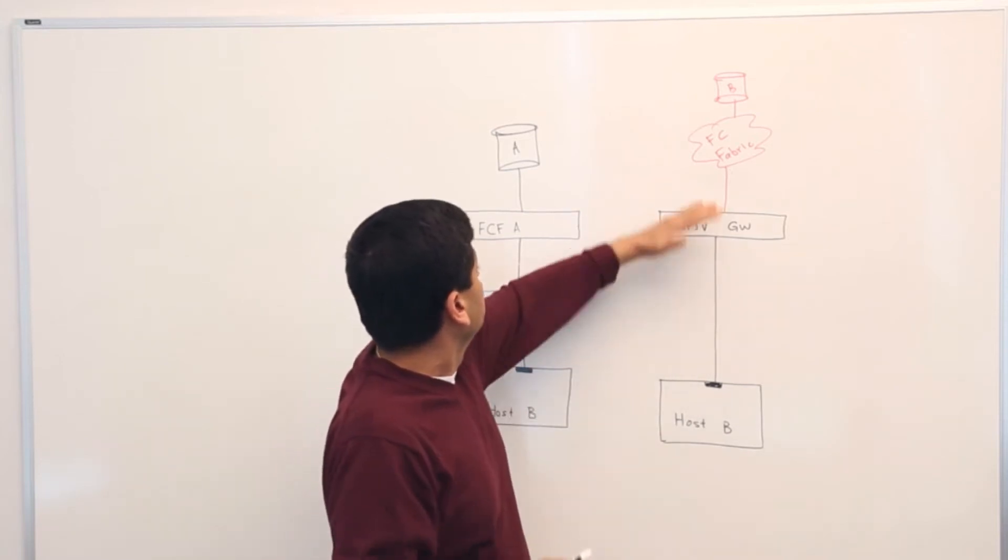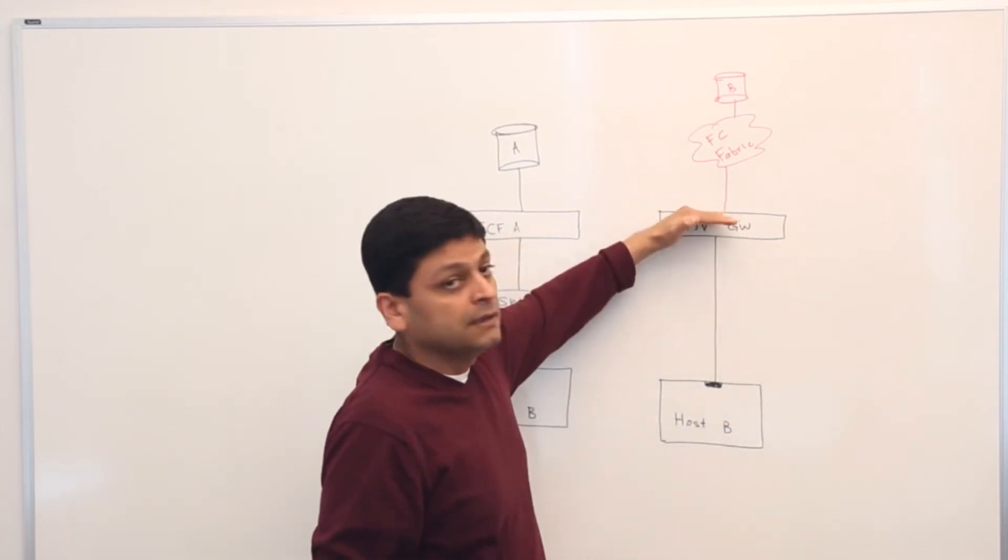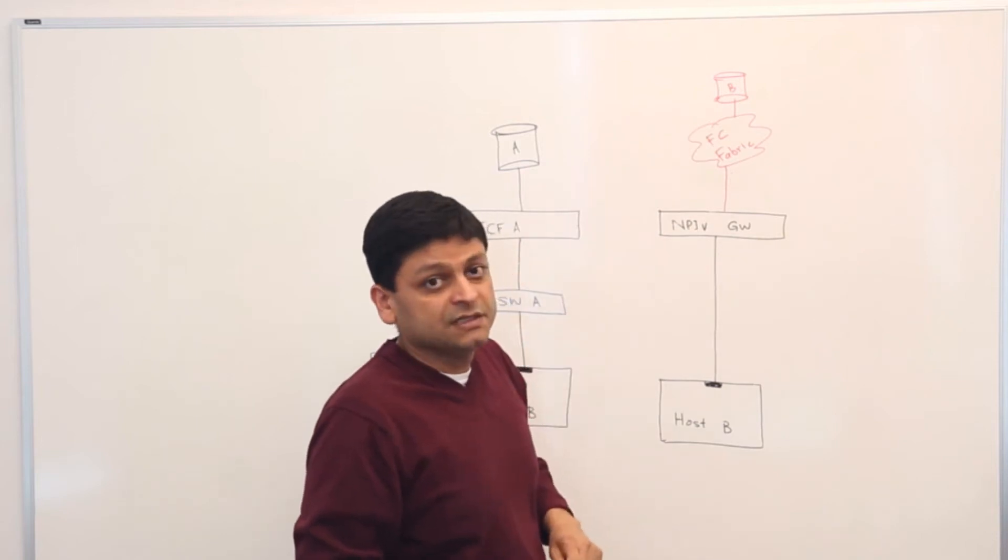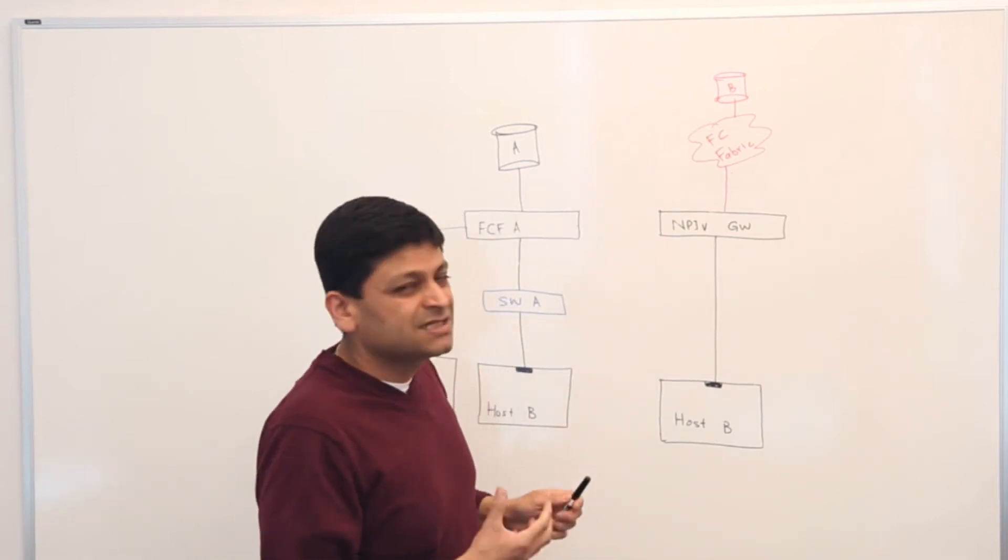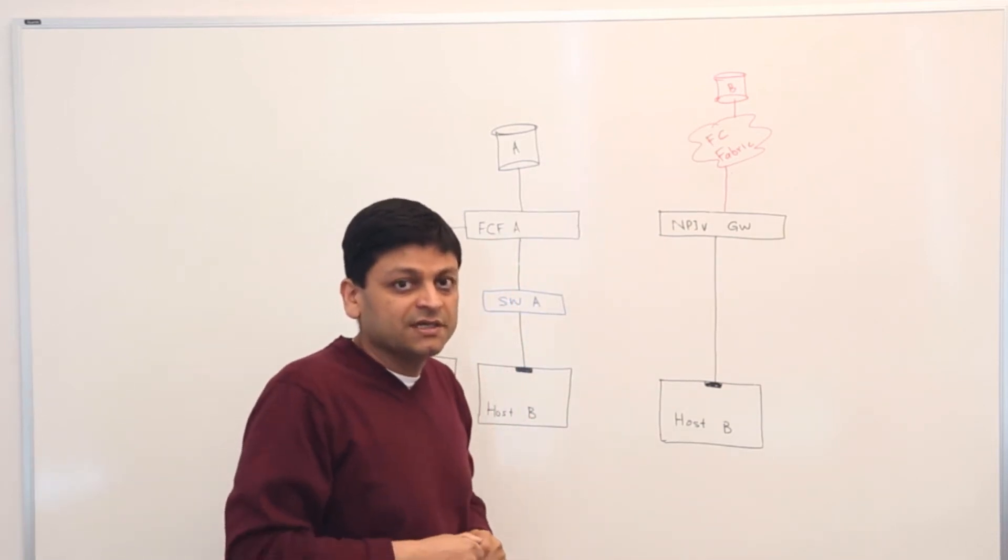And as you can see, below everything is Ethernet. On the top, everything is fiber channel. So these are two typical topologies which are deployed today.